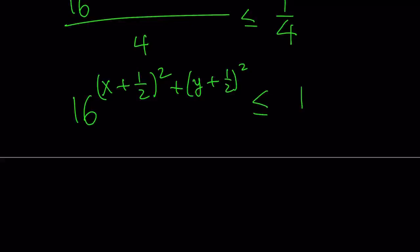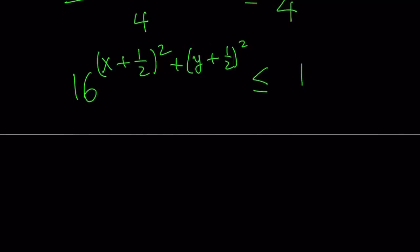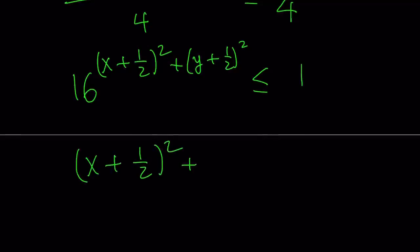Just think about it. If the exponent is 0, you're going to get 16 to the power of 0, which is equal to 1. And you want this to be less than or equal to 1. So, you want the exponent to be less than 0, obviously. If you get a positive exponent, the answer on the left-hand side is going to be greater than 1, obviously, right? Think about it. So, this involves, after logging both sides, you're going to get the following: x plus 1 half squared plus y plus 1 half squared is less than or equal to 0.